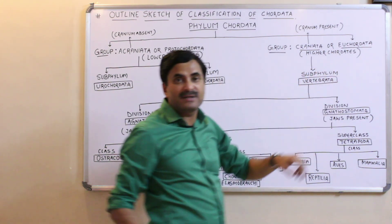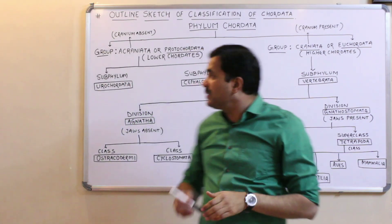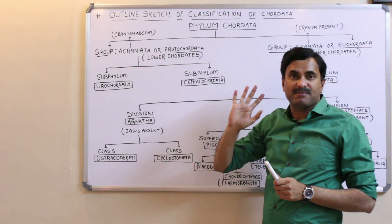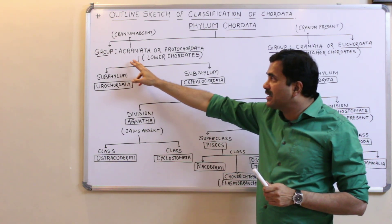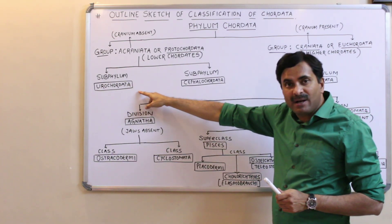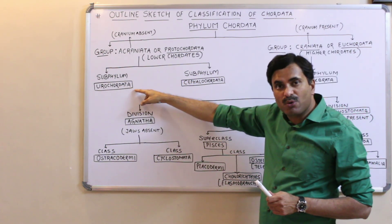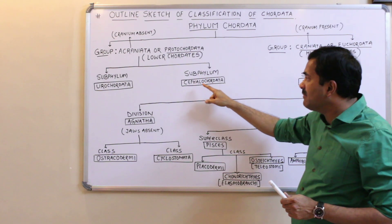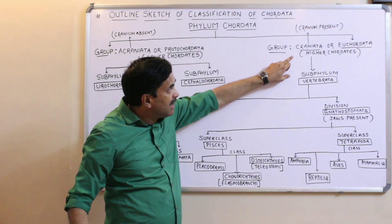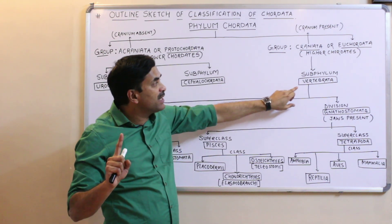The group Acraniata is classified into two major subphyla: subphylum Urochordata and subphylum Cephalochordata. The group Craniata is classified into only one subphylum, and that subphylum is called Vertebrata.